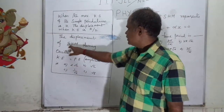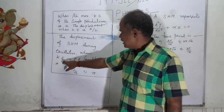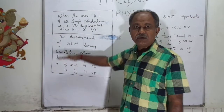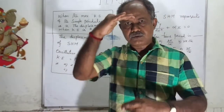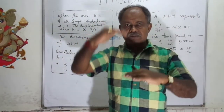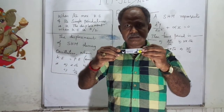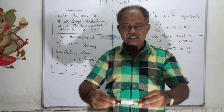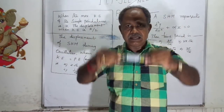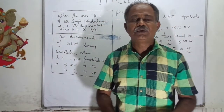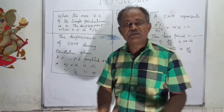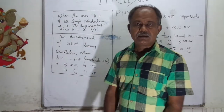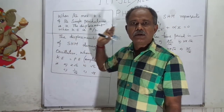The question is: find the displacement of simple harmonic motion during oscillation when kinetic energy is equal to potential energy. That is why the spring is oscillating simple harmonically. What is simple harmonic motion? To and fro motion is called simple harmonic motion. For example, if an object is attached to a spring, it moves upward, then comes back, then goes down, then returns to the original position. If a body moves here and there from a fixed point, this is called to and fro motion, which is called simple harmonic motion.